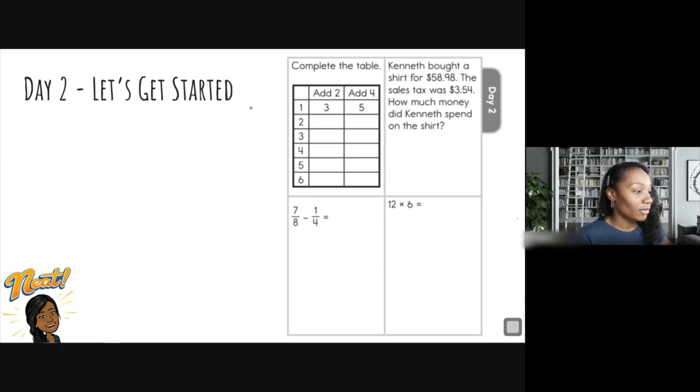All right. So we have two and we're going to add two to two. So two plus two is four. Two plus four is six. Okay. So now we have four and six. Let's go to row three. Row three, again, it says to add two to the three, three plus two is five. Again, we're starting at three. We're going to add four, three plus four is seven.